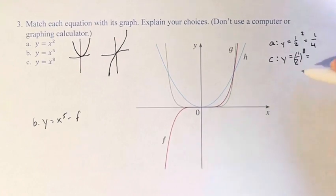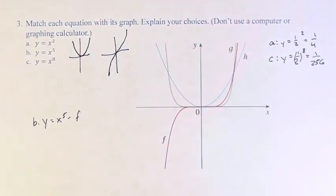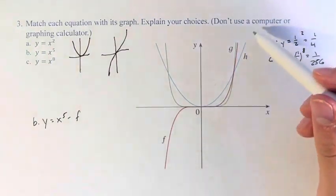And this number, two to the eighth, is 256. So close to zero, a is larger. Therefore, we would say that h is probably a. But what about when we're further away?